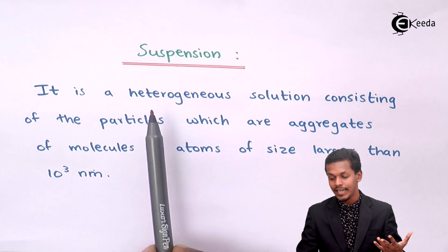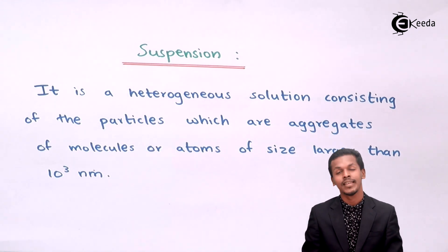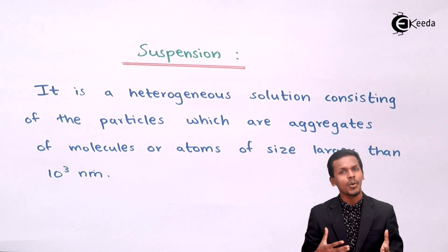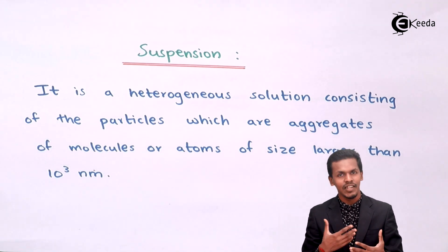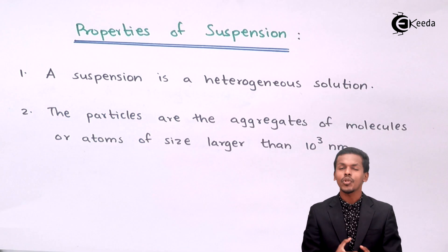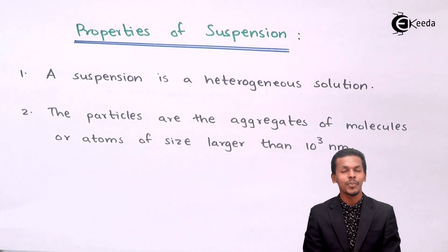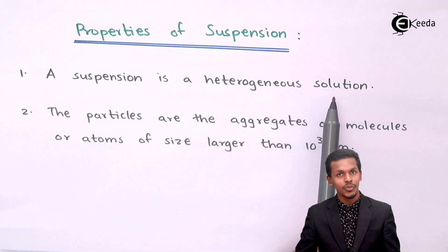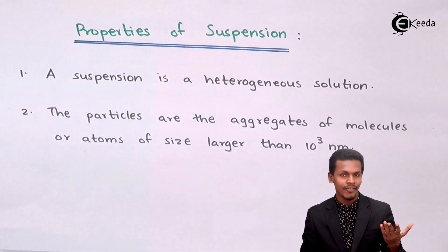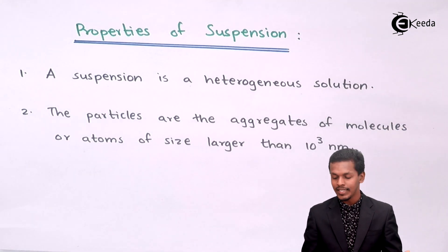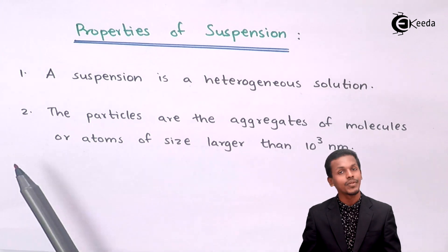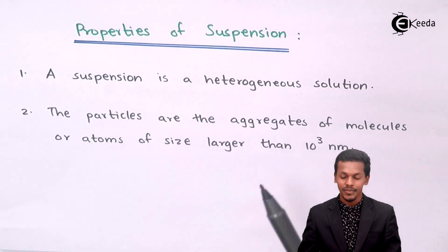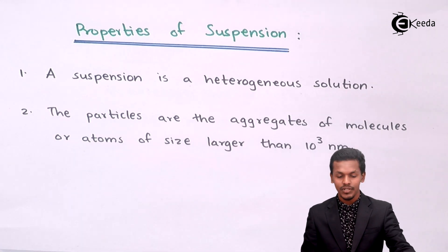Suspension is a heterogeneous solution. Now let us look at the properties of suspension. The first property is that it is a heterogeneous solution. The second property is that the particles are aggregates of molecules or atoms with a size larger than 10³ nanometers.